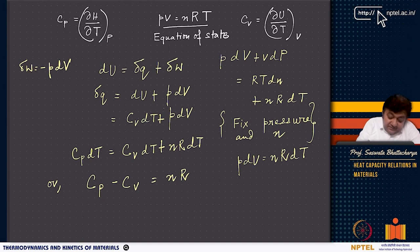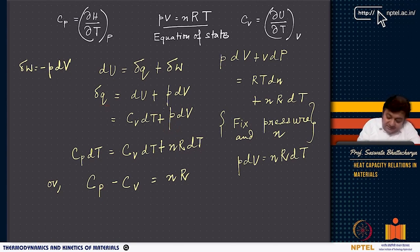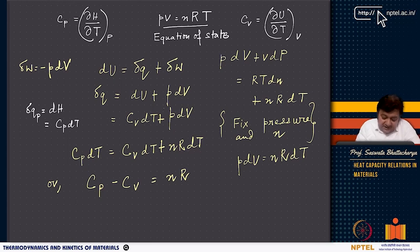dU is Cv dT, from the definition of Cv. At constant pressure, delta Q at constant pressure equals dH, which equals Cp dT. So dU is Cv dT and delta Q is Cp dT, giving us Cp dT equals Cv dT plus P dV.